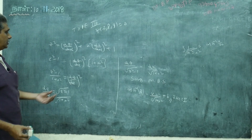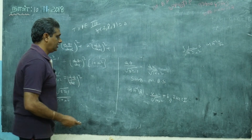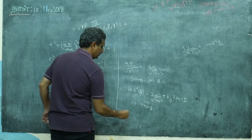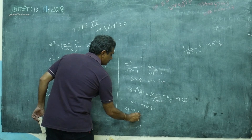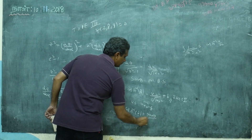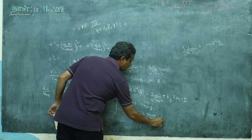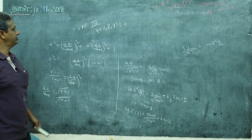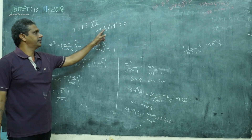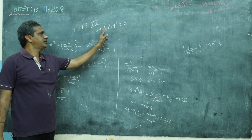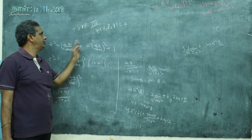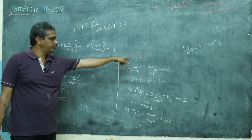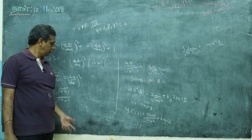Substituting back u equals x plus ay: cosh⁻¹(z) equals (x + ay) divided by √(1 + a²) plus b. This is the complete integral. For any type 3 problem: put z equals f(x + ay), let u equals x + ay, P becomes dz/du, q becomes a·dz/du, simplify to get a separable ODE in z and u, then integrate.